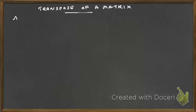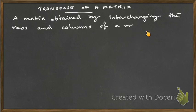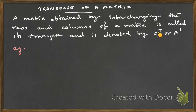In this video we talk about the transpose of a matrix. A matrix obtained by interchanging the rows and columns of a matrix is called its transpose. The transpose of a matrix A is denoted by A^T or A dash.